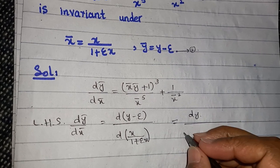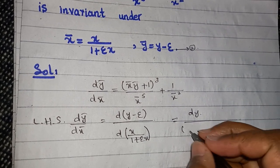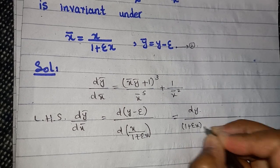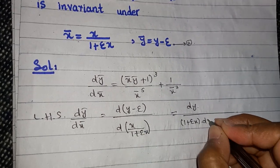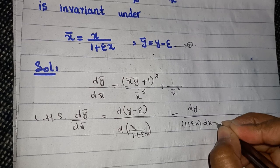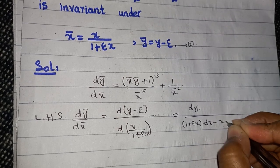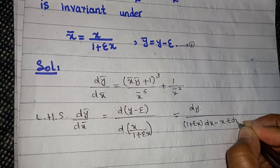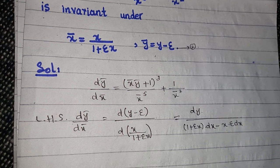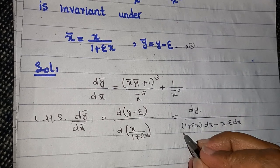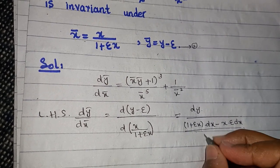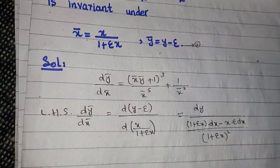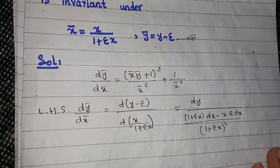For the differential of x_bar, you apply the quotient rule: denominator as it is times the differential of the numerator, minus numerator as it is times the differential of the denominator, all divided by (1 plus epsilon*x) squared.